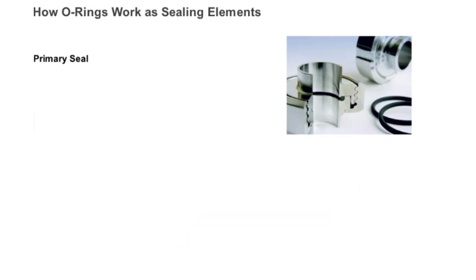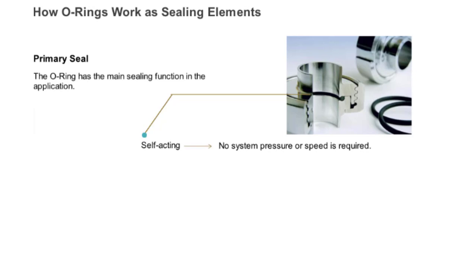If the O-ring is used as the primary seal, it has the main sealing function in the application. As an O-ring is self-acting, it is functional immediately after installation. No system pressure or speed is required. Furthermore, the O-ring is double-acting. That means the O-ring can seal in two directions.